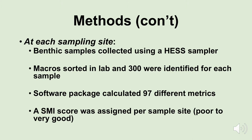At each sampling site we collected benthic samples using what's called a Hess sampler. We collected samples in the field, took them back to the lab, and sorted and identified the first 300 benthic insects we could find in the samples. We used a commercially available software package that would calculate 97 different metrics — remember, we had lots of different species of benthic macroinvertebrates and different species had different tolerances to different types of pollutants.